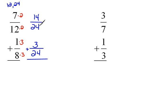So 14 twenty-fourths plus 3 twenty-fourths, our denominator stays the same of 24, and 14 plus 3 would be 17. So our answer would be 17 over 24.